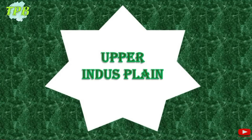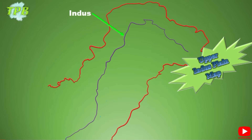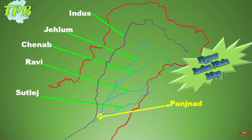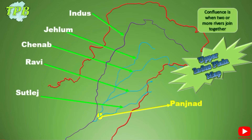First we'll talk about the Upper Indus Plain. In the Upper Indus Plain, River Indus flows with its eastern tributaries, namely Jhelum, Chenab, Ravi, and Sutlej. These eastern tributaries confluence at Panchnad — confluence is when two or more rivers join together and flow as one river. All the eastern tributaries confluence at Panchnad and then flow as River Panchnad, which flows almost 72 kilometers southwestwards and finally confluences into River Indus at Mithankot.